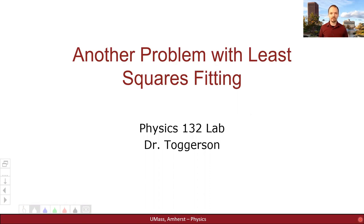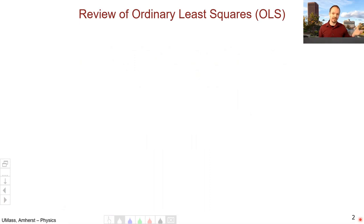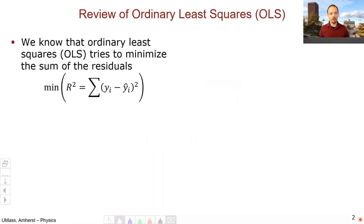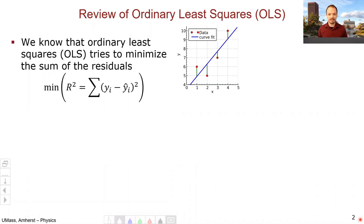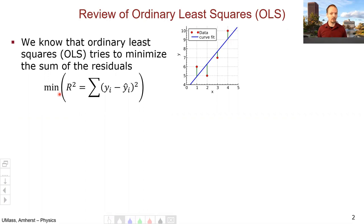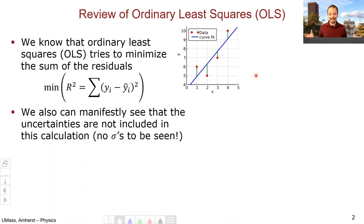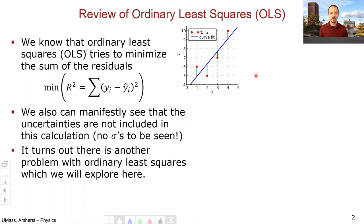In this video we're going to explore another problem with least squares fitting. In the previous section we talked about ordinary least squares, or OLS. OLS tries to minimize the sum of the residuals — for each data point we look at the residual, the difference in Y between the data point and the line, square it so pluses and minuses don't cancel, then add them all up. We can manifestly see that uncertainties are not included in this calculation — there are no sigmas anywhere. That's one problem we've already mentioned, and it turns out there's another problem with least squares, which is the subject of this section.